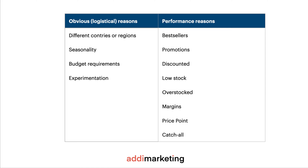The idea behind the performance split is you separate a subset of products and apply different settings — different budget, different bidding — and try to optimize performance this way. Examples could be bestsellers versus regular products, promotions versus non-promotions, discounted products, low stock, overstocked, and so on.